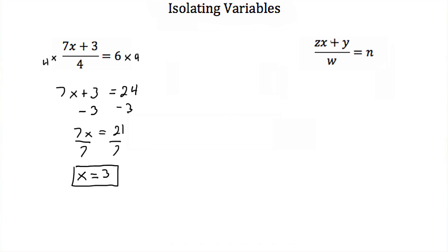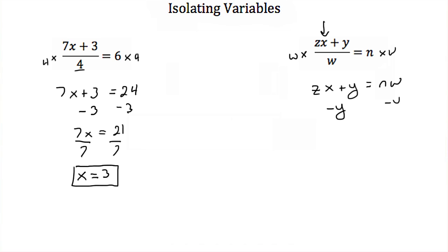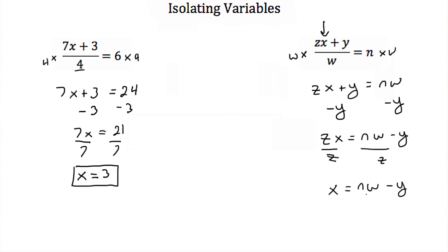Here we're given an equation just like the first equation, and we want to isolate x. Our first step was to multiply both sides by 4, or whatever was in the denominator, so we're going to multiply both sides by w. We would end up with zx plus y is equal to n times w. Then we would subtract y from both sides to get zx is equal to n times w minus y. Then lastly, we would divide both sides by z, and we would get x is equal to n times w minus y, all over z.